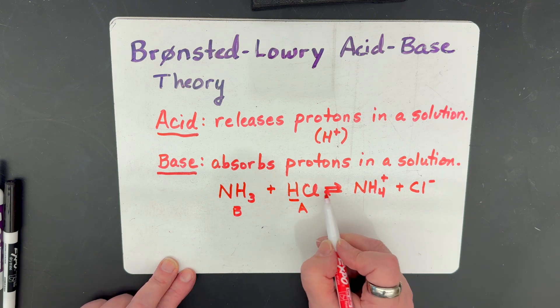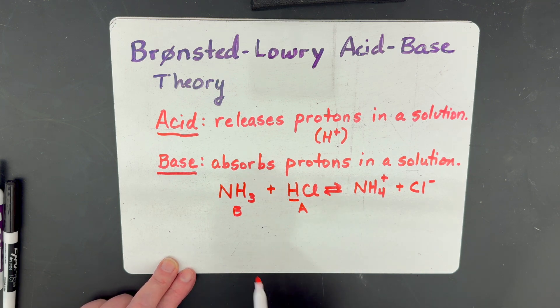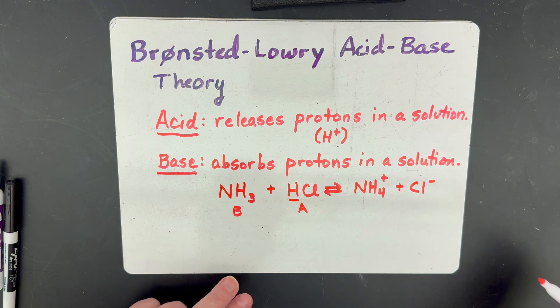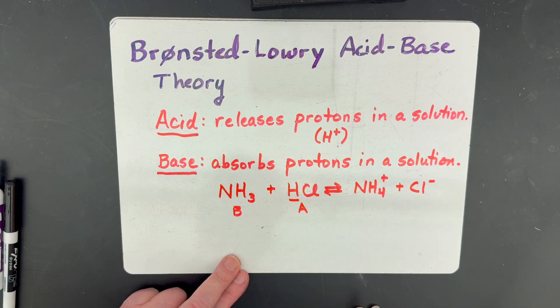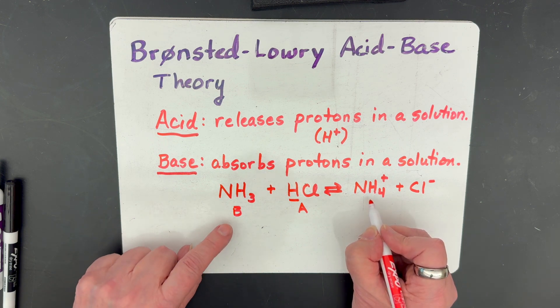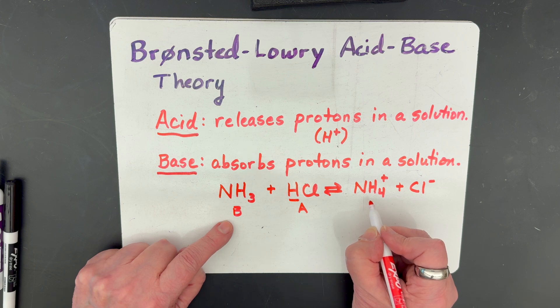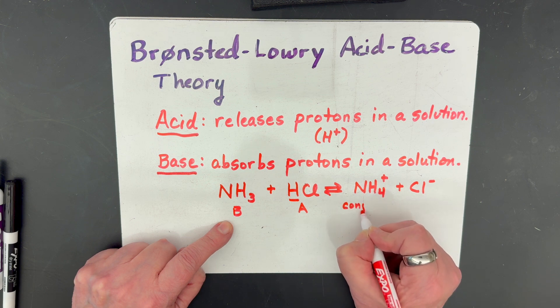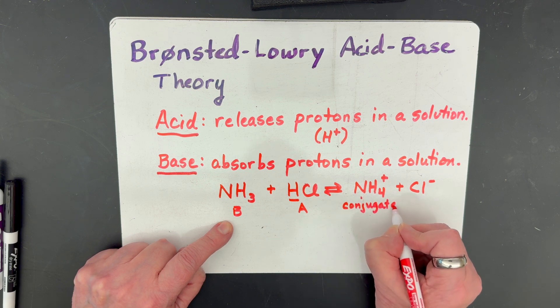Now, these are reversible reactions, which means they can go in the forward and the reverse direction. If this went in the reverse direction, then our NH4+ becomes NH3. It loses a hydrogen, which is what acids do. So this is called a conjugate acid.